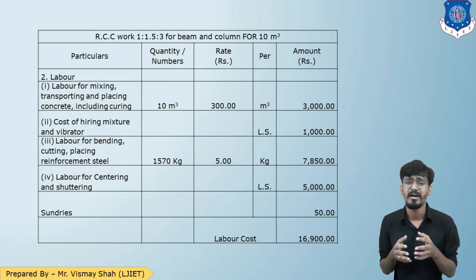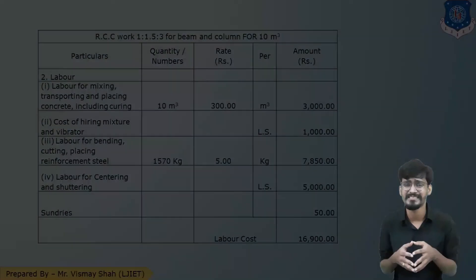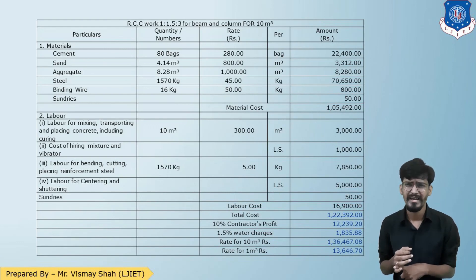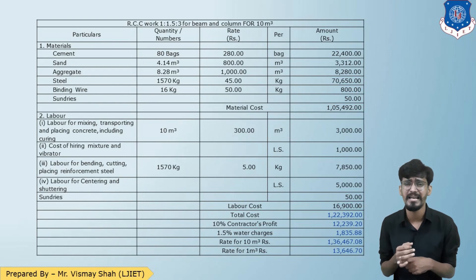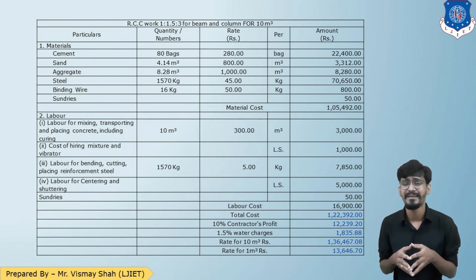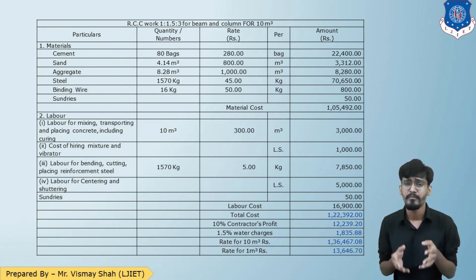In the detailed rate analysis table: material component is Rs. 1,05,492 and labor component is Rs. 16,900, giving a total of Rs. 1,22,392. Adding 1.5% water charges and 10% contractor's profit, the grand total is Rs. 1,36,467 for 10 cubic meter. Dividing by 10, the final answer is Rs. 13,646.70 per cubic meter, which can be rounded to Rs. 13,650 or Rs. 13,700 — both are accepted.